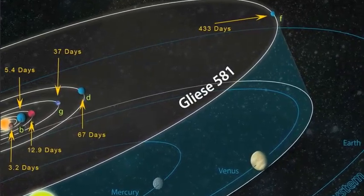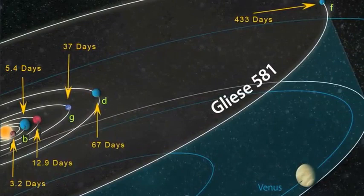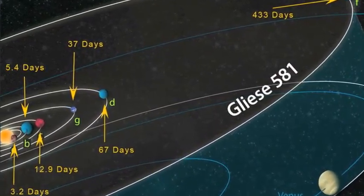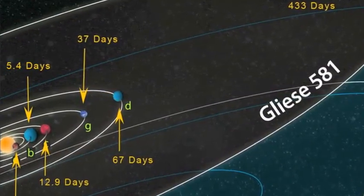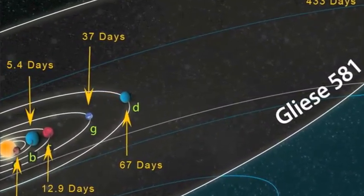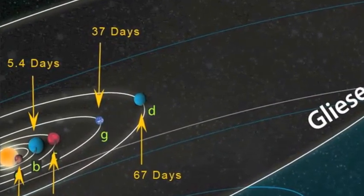Of these, the 37-day planet is the most intriguing. It is measured to be 3.1 times more massive than the Earth, with a surface gravity of between 1 and 1.7 times that of our home planet. We would weigh up to 70% more on Gliese 581g.